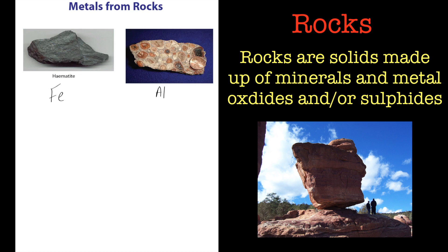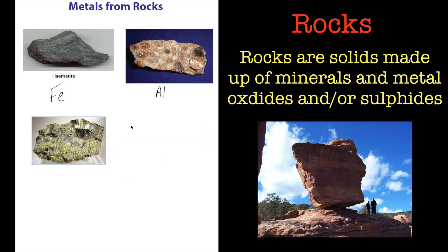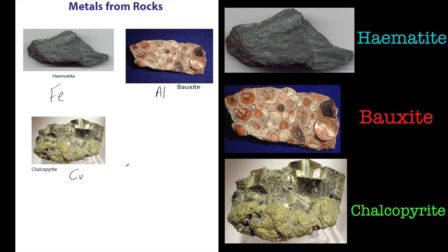You've also got chalcopyrite, and this is a source of copper. As you can see, you can't see the physical properties of the elements from that - you can't see that that's a nice silvery metal of aluminium, or this is a nice metallic iron, or even the copper-coloured copper from the chalcopyrite.